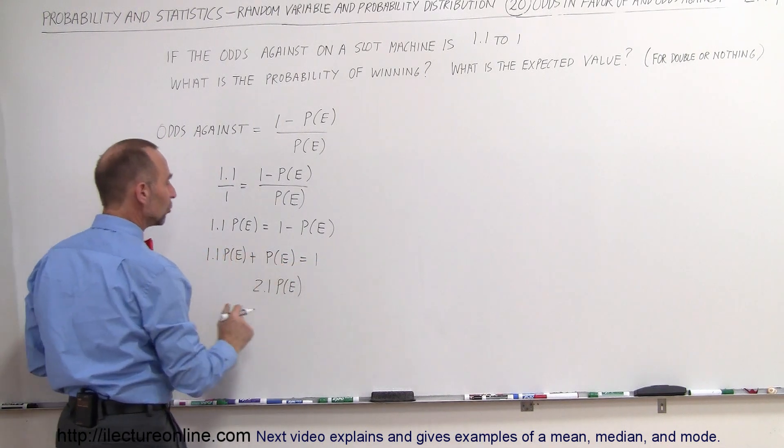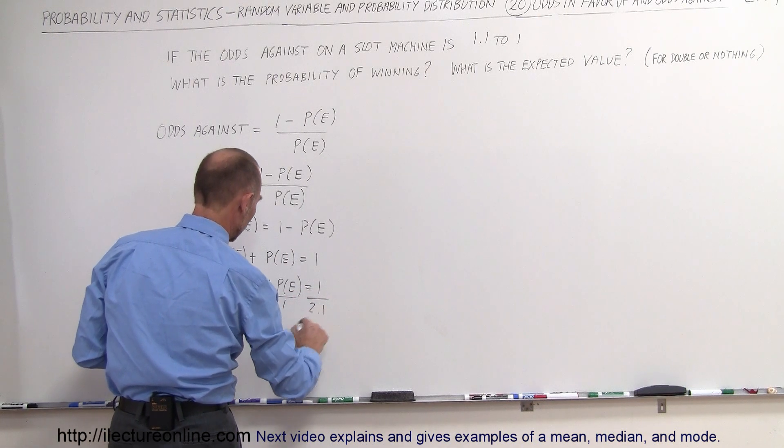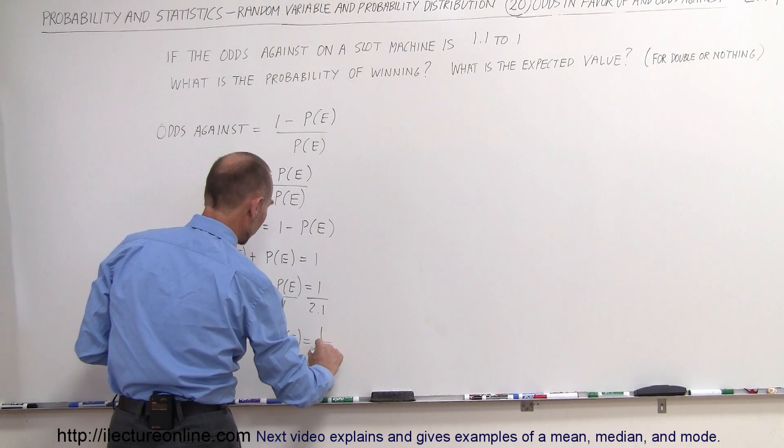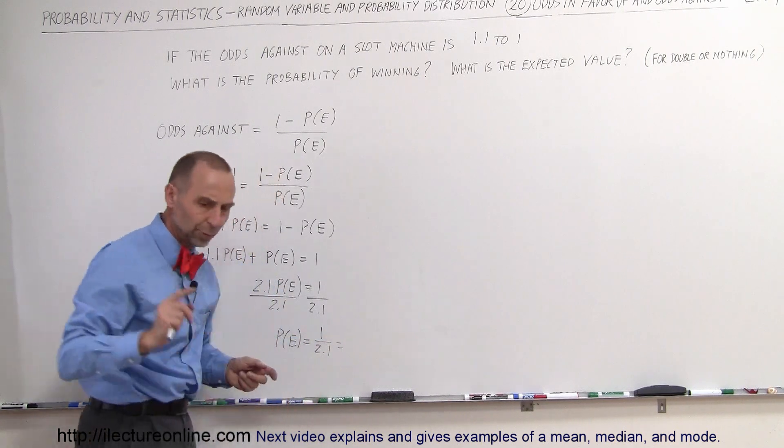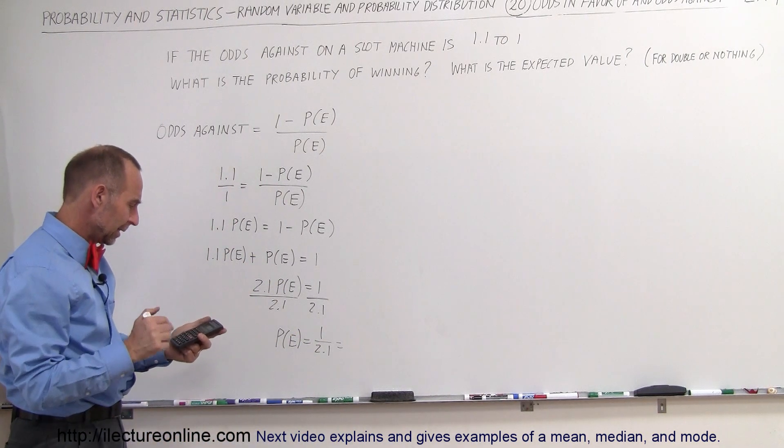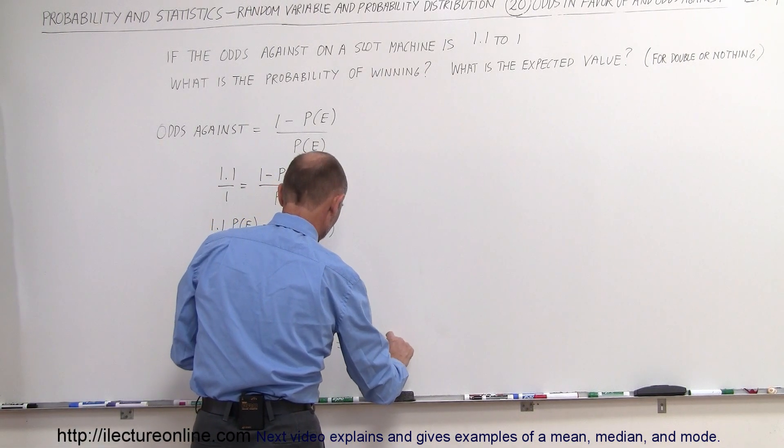So that's 2.1 times the probability of the event occurring. I'm simply adding the two terms together. And now we divide both sides by 2.1. And the probability of the event occurring is equal to 1 divided by 2.1. Of course, with a calculator, we'll find out what it is equal to. So 1 divided by 2.1, that is equal to 0.476.